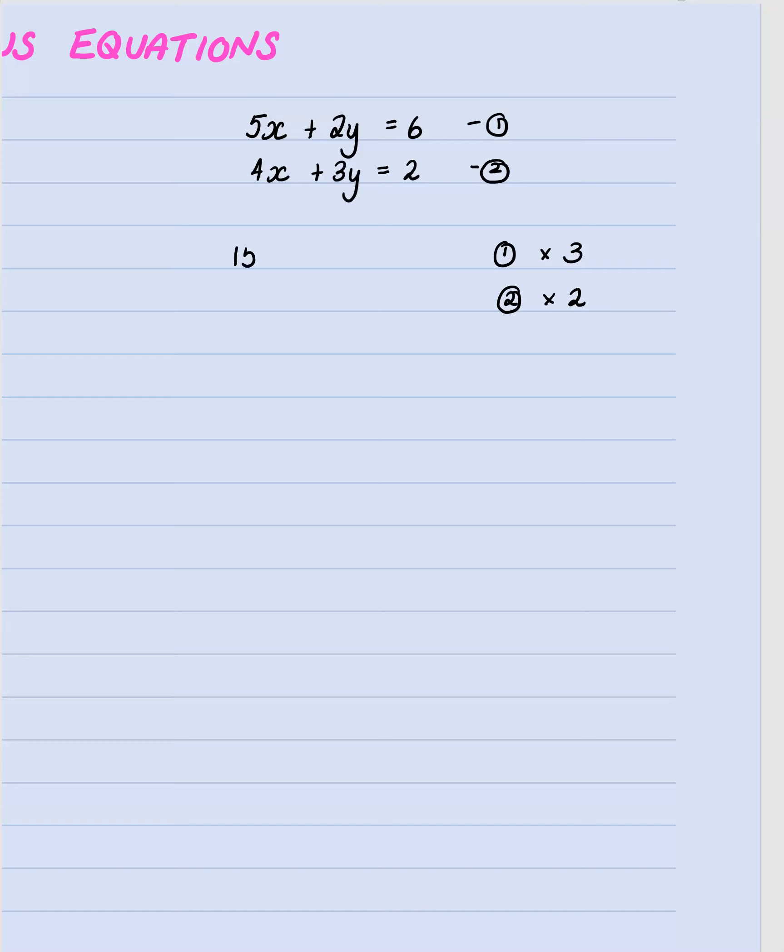So remember times every single term by three. That's probably where you would find an error if you were to make one. I sometimes forget to times every single thing by that number and then this one we're going to times everything by two. So we end up with 8x plus 6y and we can see that they have the same coefficient and two times two is four.